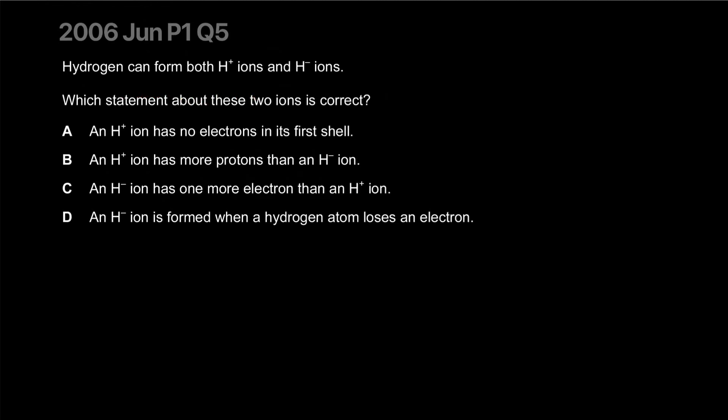Hydrogen can form both H+ ions and H- ions. Which statement about these two ions is correct? H+ ion has no electrons in its first shell. That's completely true. H+ ions - hydrogen is just a proton with an electron around it, and when you take the electron away, well, it's just a proton. H+ ions are just protons. Imagine that, these are just flying protons.